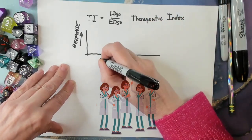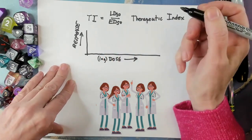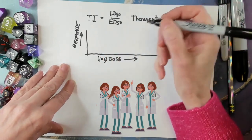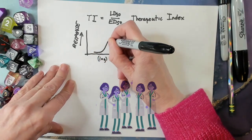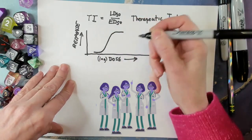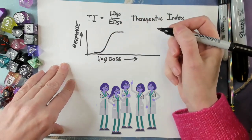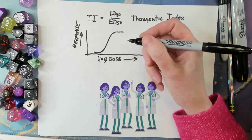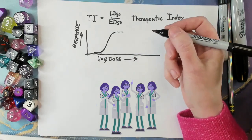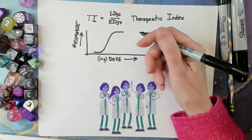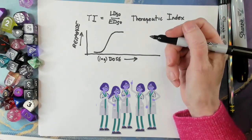So I test this drug — and by the way, this is logarithmic scale — and I notice that as I increase the dose, I get a certain response, and then at some point, no matter how much I increase the dose, the clones never get any more blue. And that's the dose-response curve for my new drug that turns people blue.